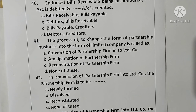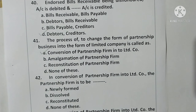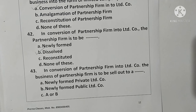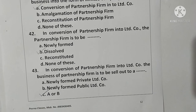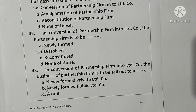Question 41: The process of changing the form of a partnership firm into a limited company is called conversion of partnership firm into limited company. Option A is correct. Question 42: In conversion, the partnership firm is to be dissolved. Option B is correct. Question 43: The business of the partnership firm is sold out to a newly formed company — option C (A or B, i.e., either private or public company) is correct. Remaining questions will continue in the next part.